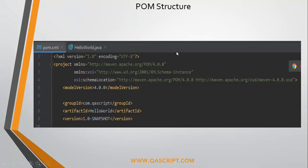But if you are creating, say for example, a Java project and not a Maven project, you need to add this pom.xml by yourself. You need to add this XML file and then you need to enter all this information — the project information — to make it a valid Maven project.